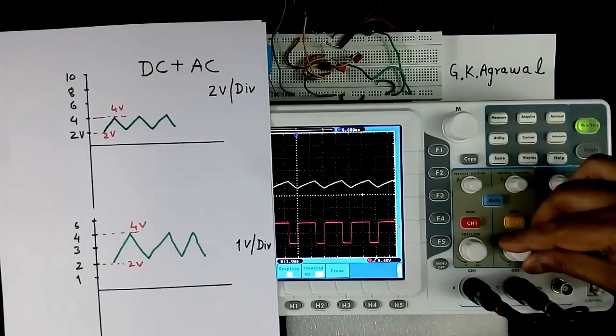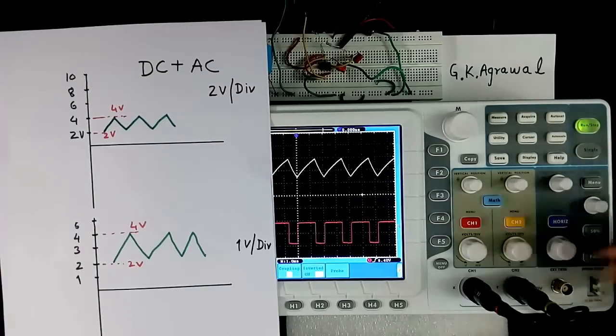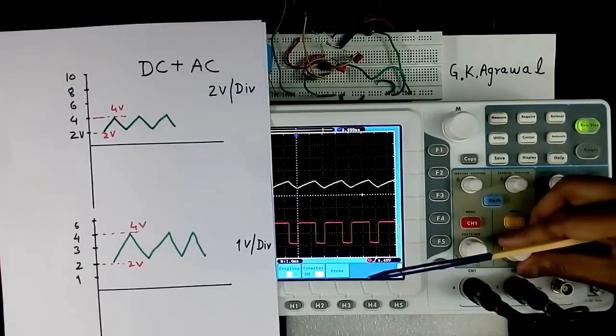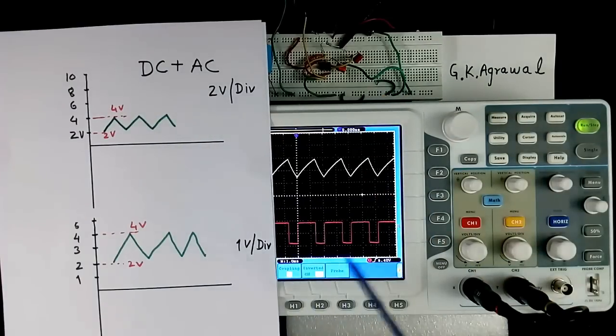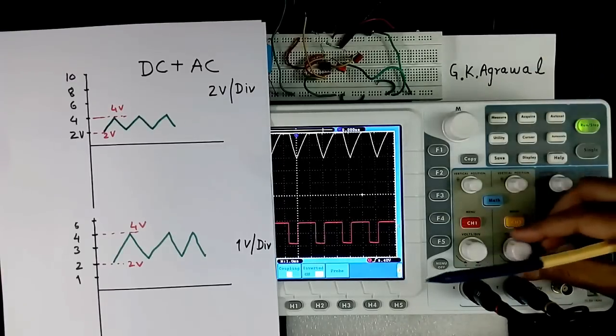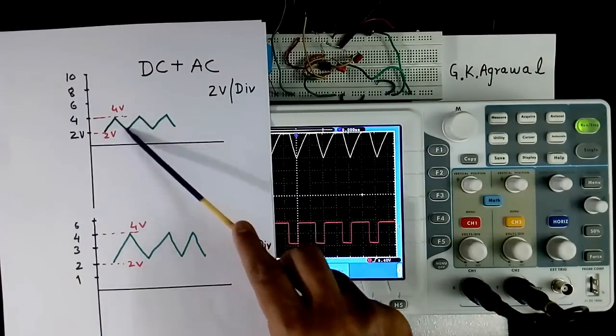Earlier this was here. This was here. Like this. When I reduce the scale, both will get shifted. If you go further, it will go out of range. If you want only this AC, then you have to select the AC coupling.